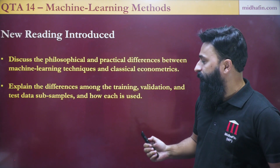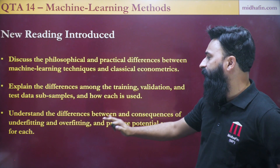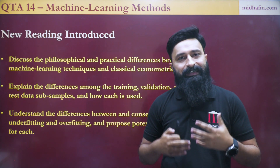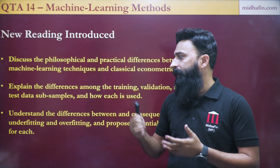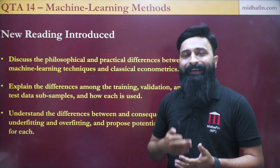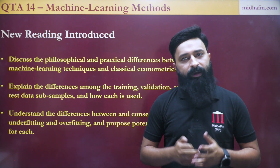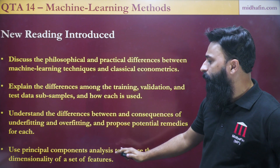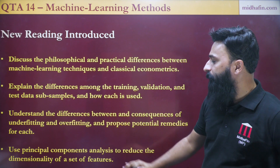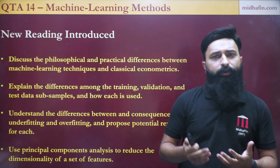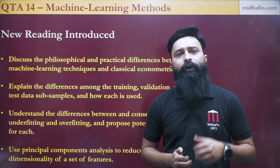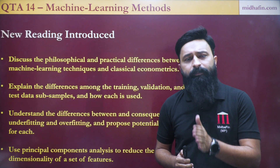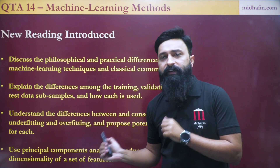The third learning objective covers understanding the differences and consequences of under-fitting and over-fitting. These are problems which were also present in traditional econometrics, regression and all, and in machine learning as well, though the degree to which they affect these two domains is quite different. The next learning objective is using Principal Components Analysis to reduce the dimensionality of a set of features. Principal Components Analysis is a very popular statistical technique for dimensionality reduction — it creates a small number of variables which provide almost the same information as a large number of correlated variables.